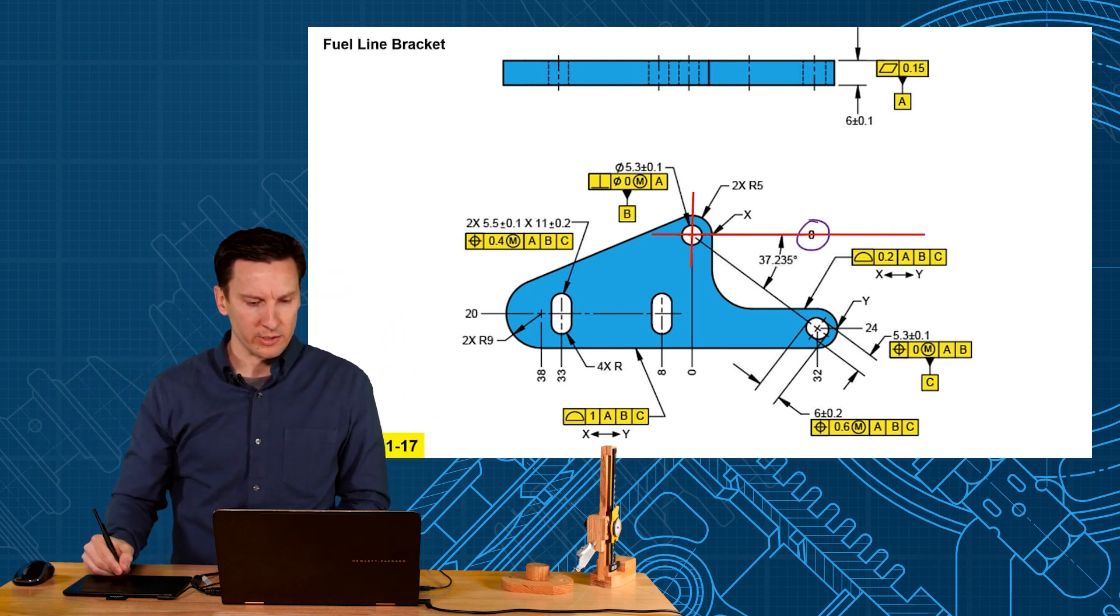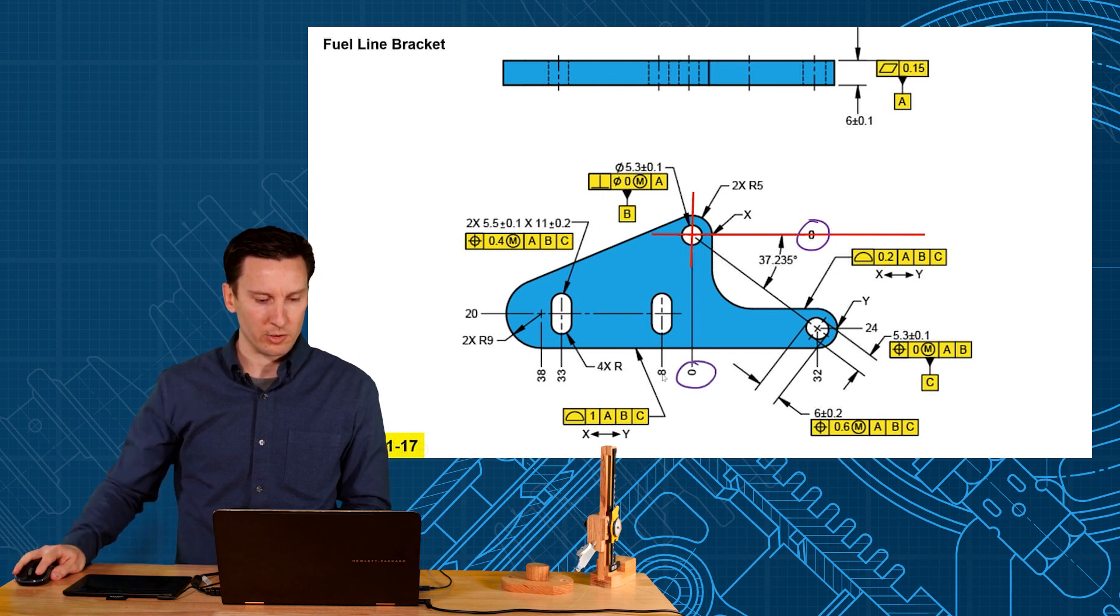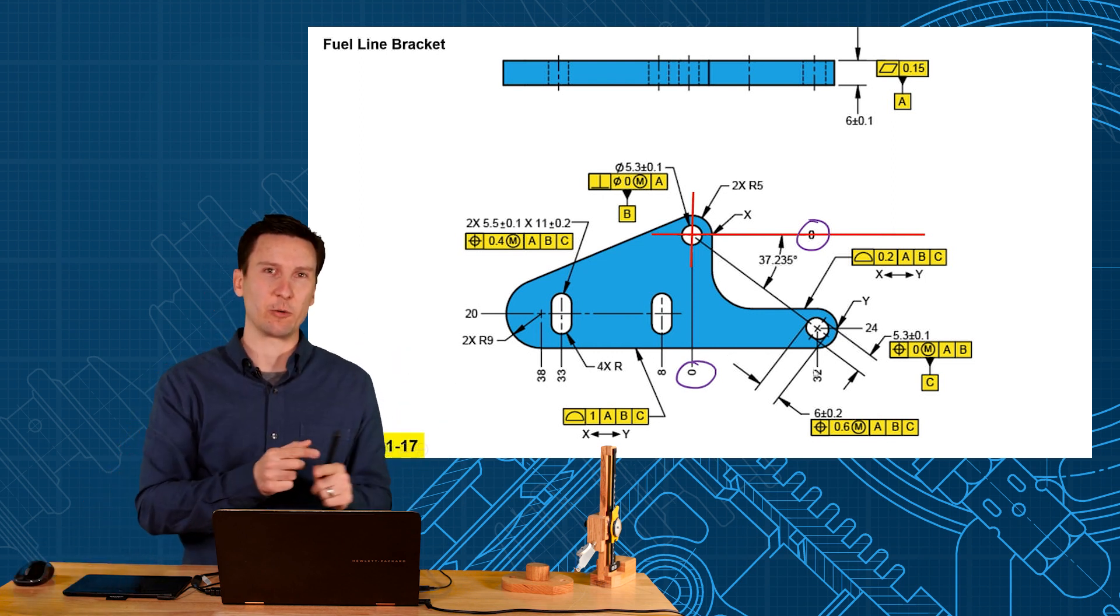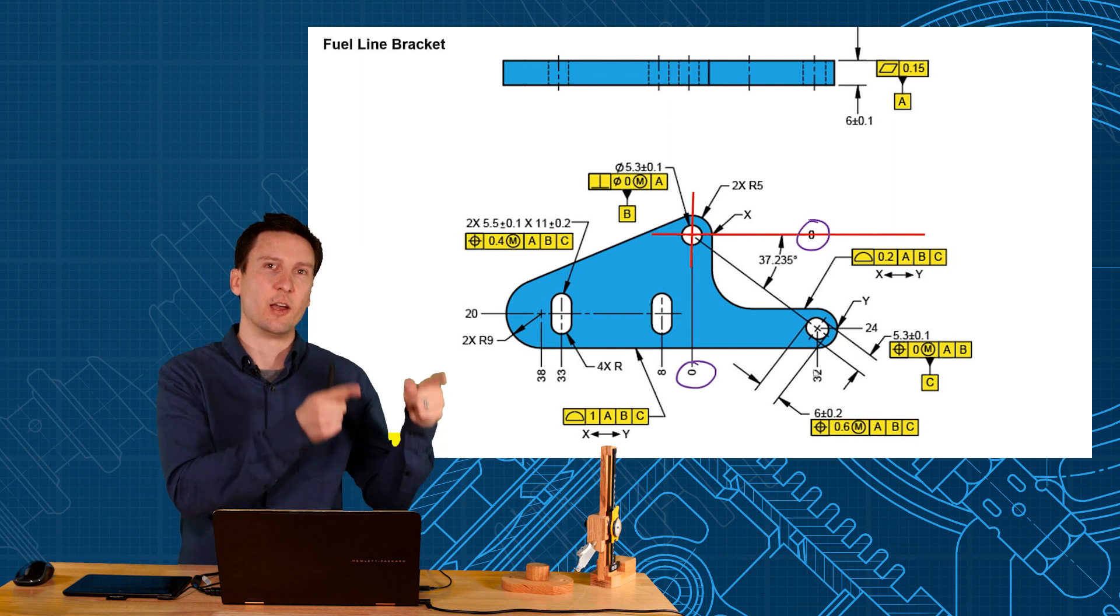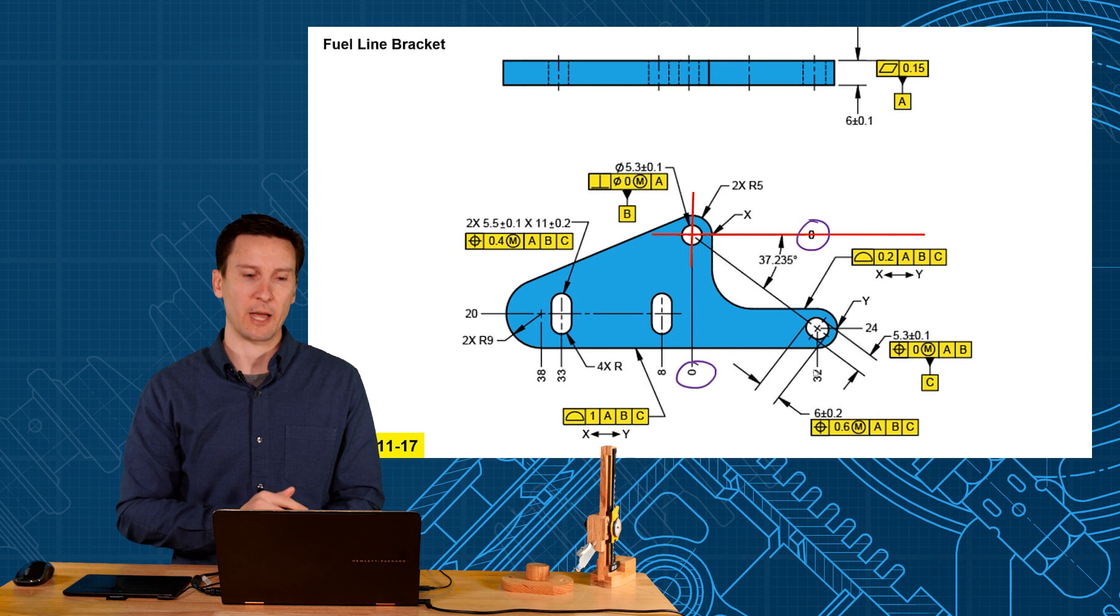And then I've used ordinate dimensioning. I love ordinate dimensioning on more complicated parts. This is 8 millimeters away. This is 33 millimeters away. This is 38 millimeters away. This is 20 millimeters away, in the x and y direction here without having to have all the lines come through and make it really busy for the arrowheads for dimensioning everything. So ordinate dimensioning and geometric tolerancing work really well together.